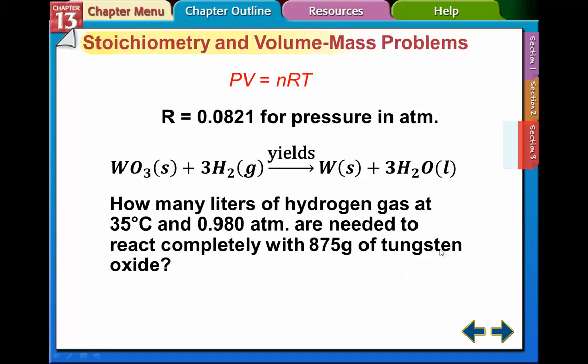The problem we have here is: how many liters of hydrogen gas at 35°C and 0.90 atm are needed to react completely with this amount of tungsten oxide, 875 grams of tungsten oxide?